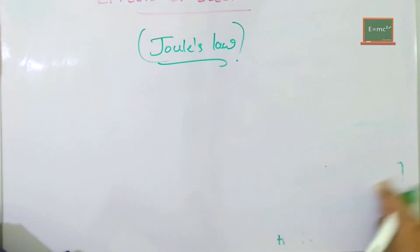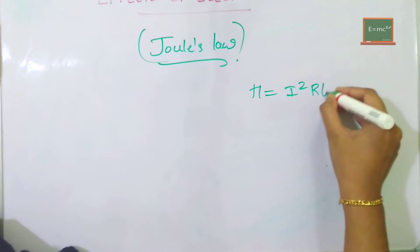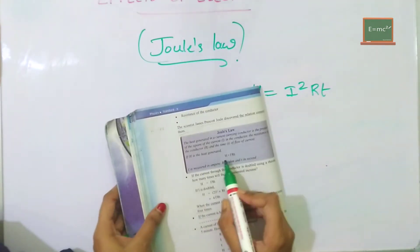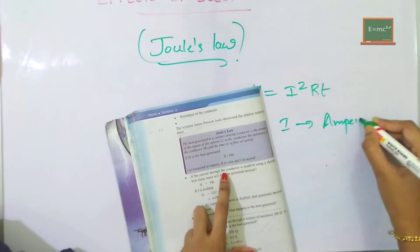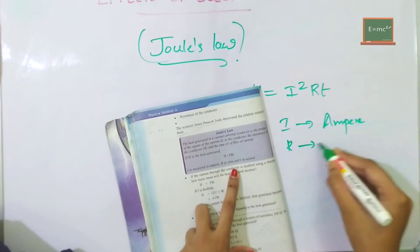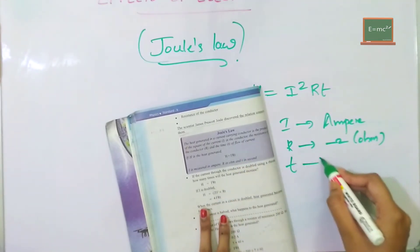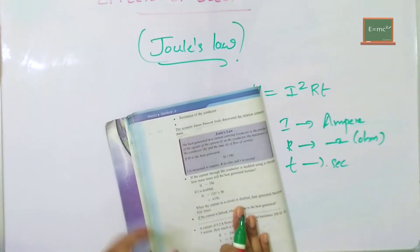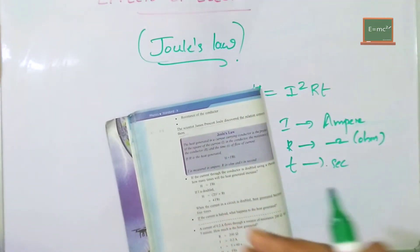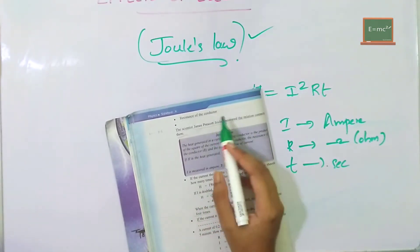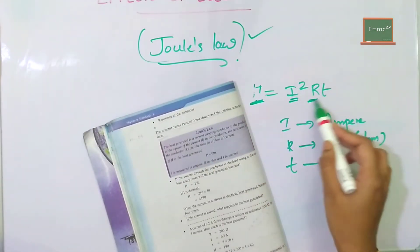The equation is H is equal to I squared R T. The measurement unit of current is ampere, resistance is ohm, and time is seconds. James Joule is the scientist who discovered this relationship. The relationship is between heat energy, current, resistance, and time.